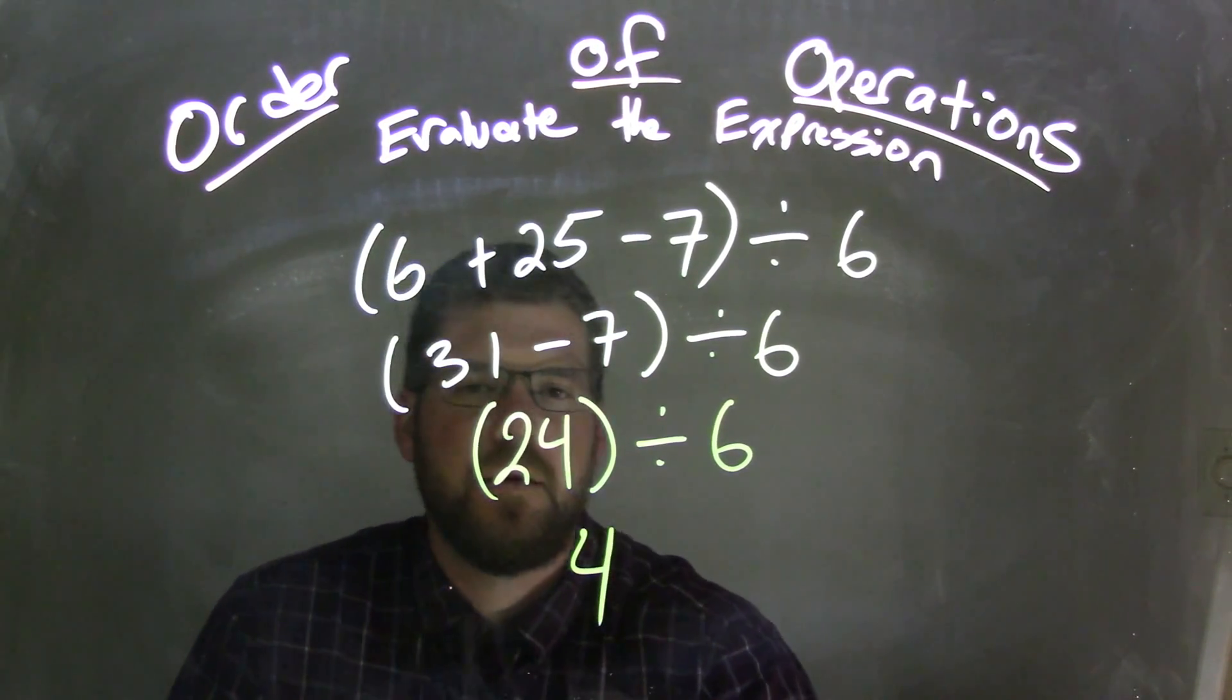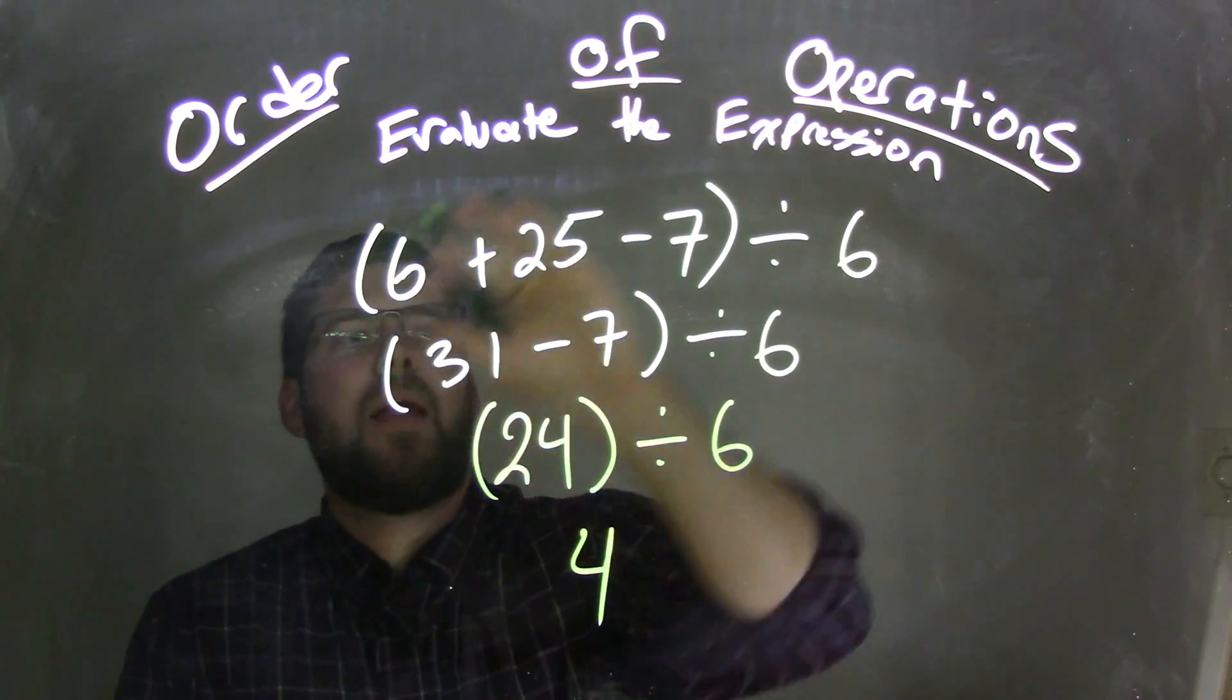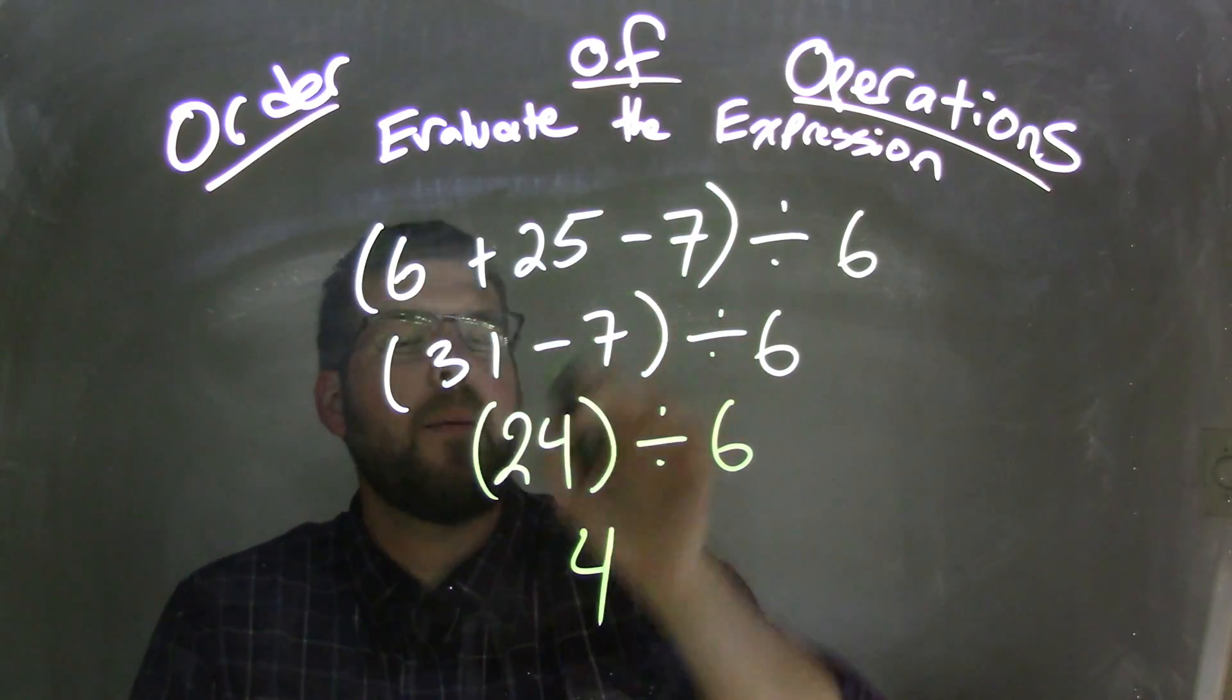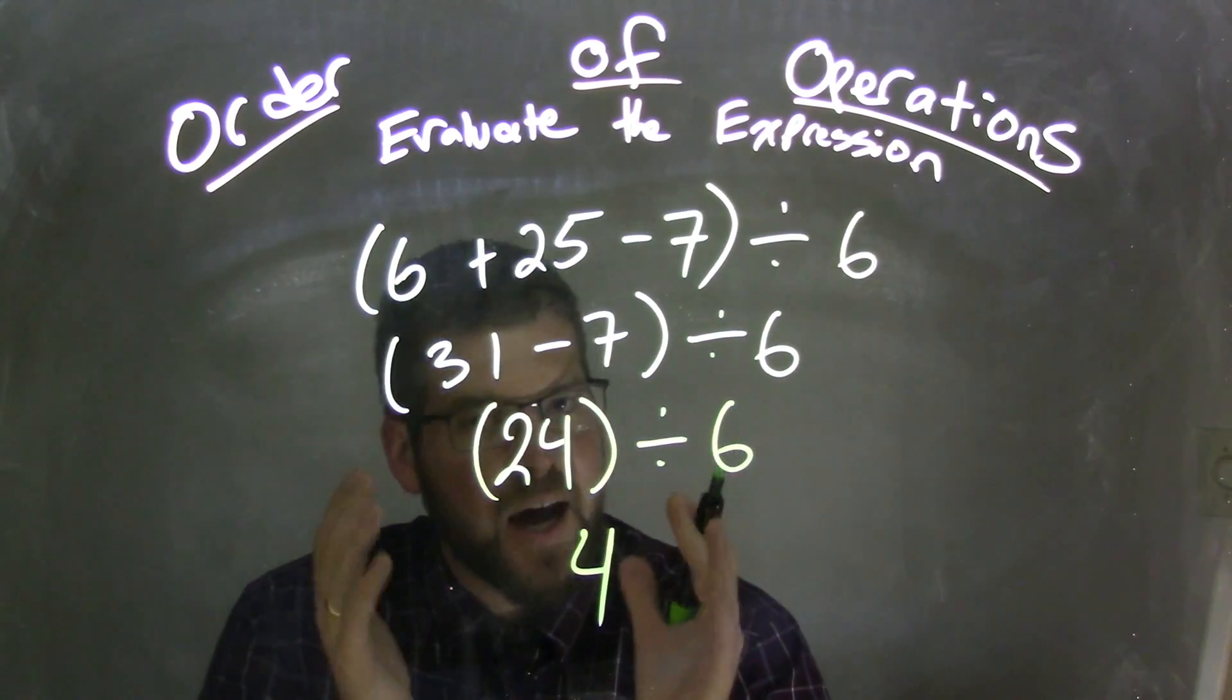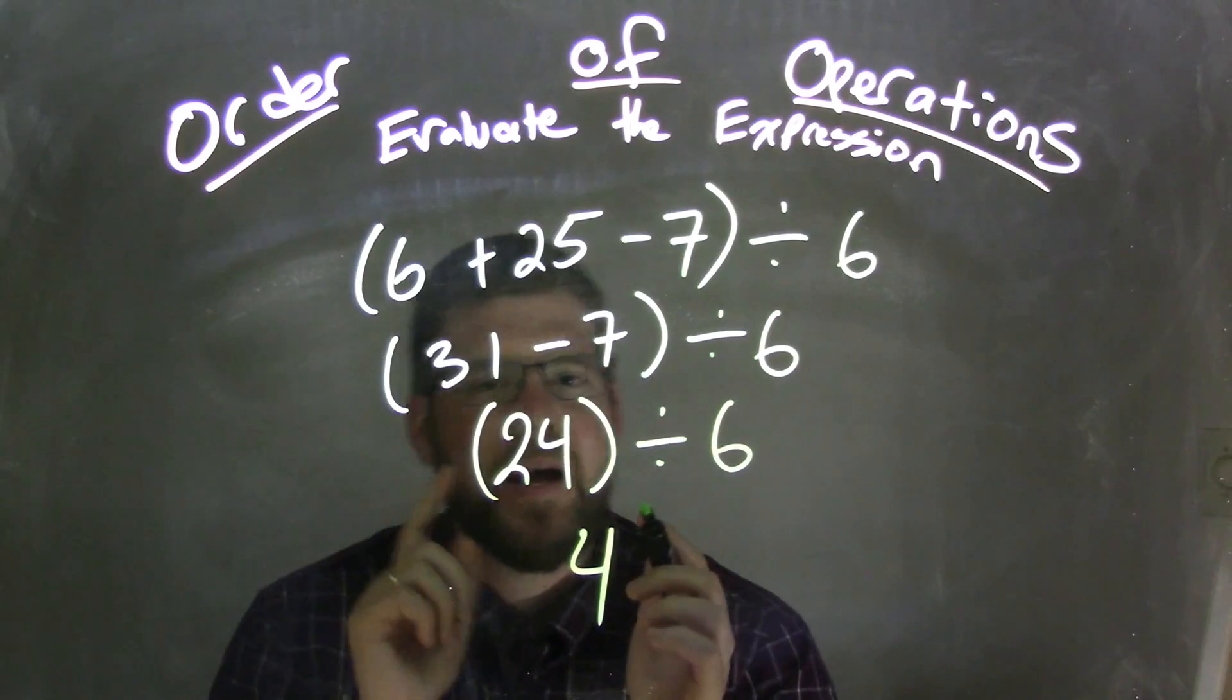and there we go. So we started with that big parentheses with three numbers inside, right? Separated by addition and subtraction. We dealt with what was inside of the parentheses first. We got 24,